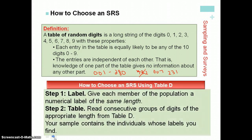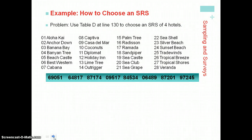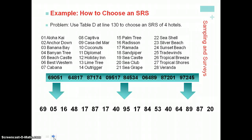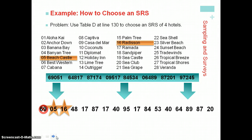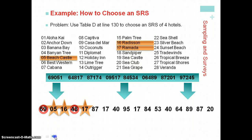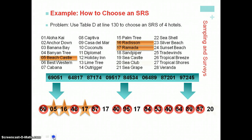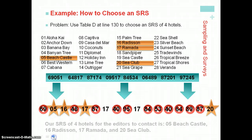Your textbook goes through another example where you're choosing four hotels from a list of 28 hotels — so they choose two digits at a time. The first is 69: there's no hotel labeled 69, but there is one labeled 5 and one labeled 16, and none labeled 48, but there is one labeled 17, and so on. You go through choosing two digits at a time until you've found the four items you're interested in, randomly selected.